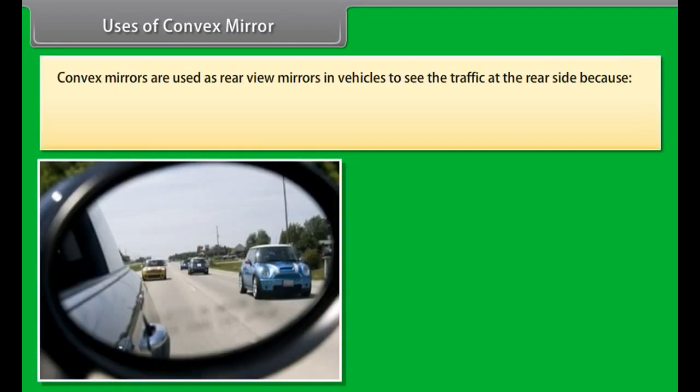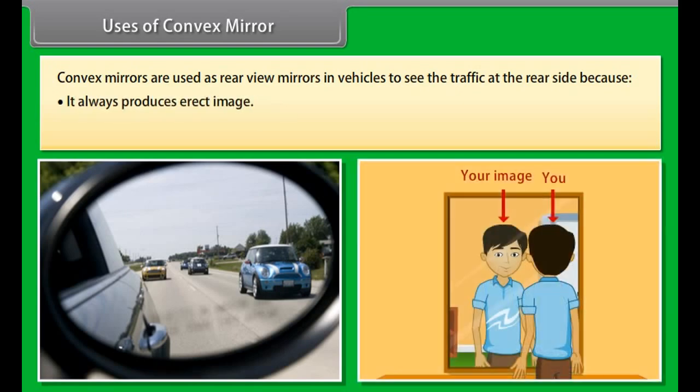Convex mirrors are used as rear-view mirrors in vehicles to see the traffic at the rear side, because they always produce an erect image, the size of the image is small, and so we can see a wide field of view of traffic behind.